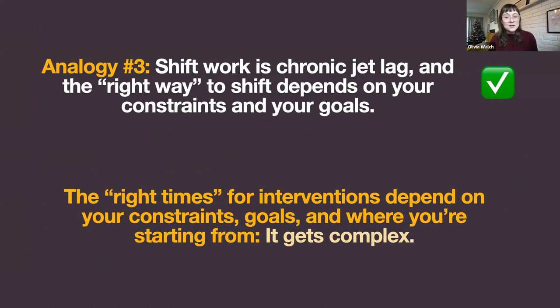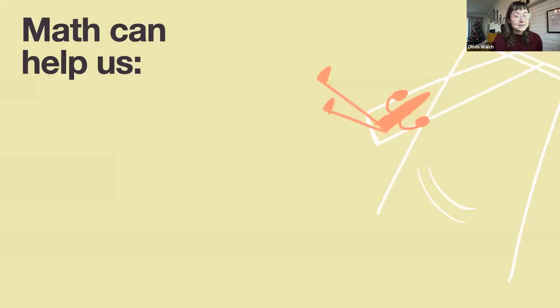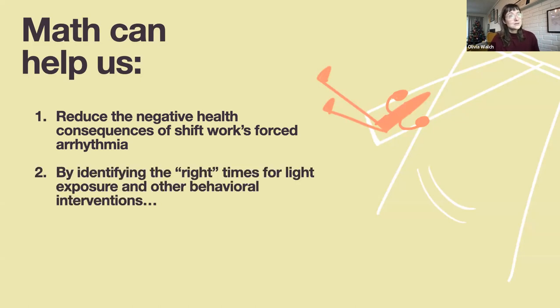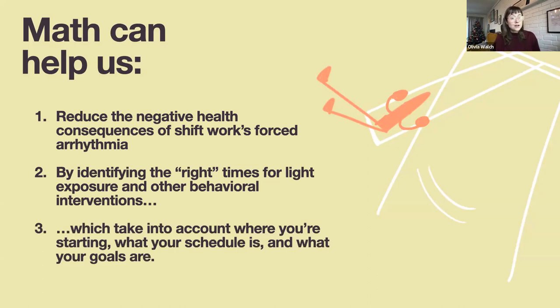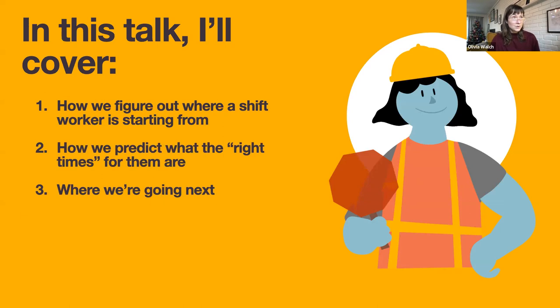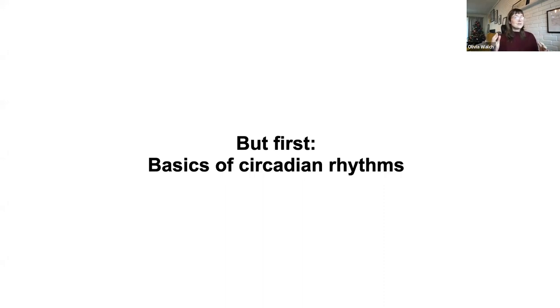So shift work is forced arrhythmia driven by signals at the wrong times, and the right times for interventions depend on complex interacting factors. As a mathematician, my response is: how can math help? Math can reduce the consequences of shift work's forced arrhythmia by identifying the right times for behavioral interventions and light exposure, taking into account where you're starting, what your schedule is, and what your goals are. In this talk I'll cover how we figure out where shift workers are starting from, how we predict the right times for them, and where we're going next.